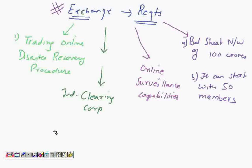You would also recall that at the exchange level, a stock exchange need not necessarily get approval for a currency exchange. In any case, because RBI and SEBI both are regulating the currency futures and currency options market, it's clearly stated that an existing commodity exchange might be allowed to become a currency exchange. So for a currency exchange, you need a balance sheet net worth of 100 crores and can start with 50 members.